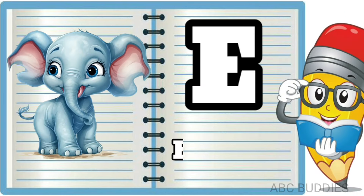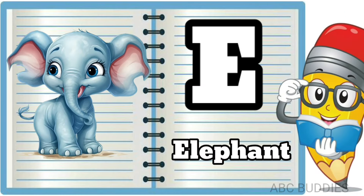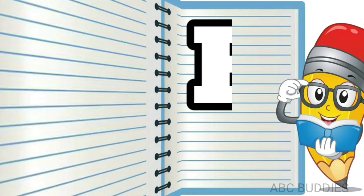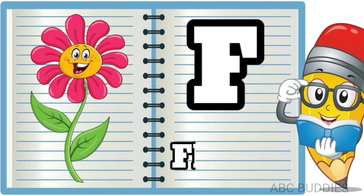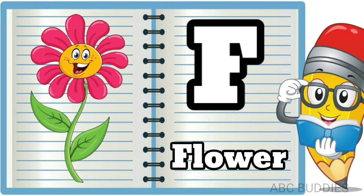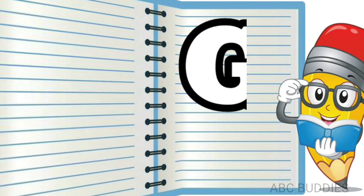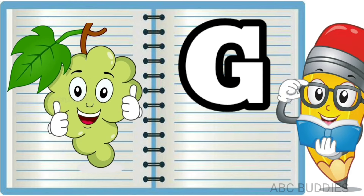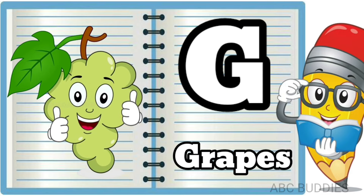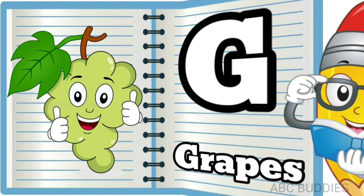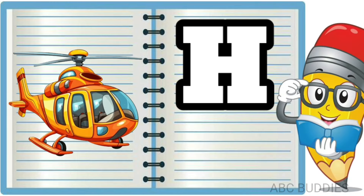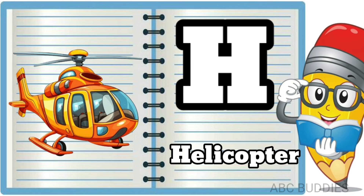E is for Elephant. F is for Flower. G is for Grapes. H is for Helicopter.